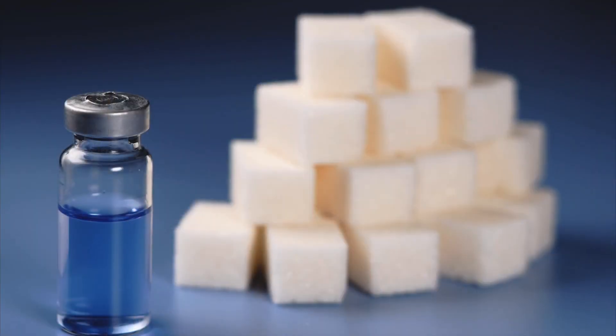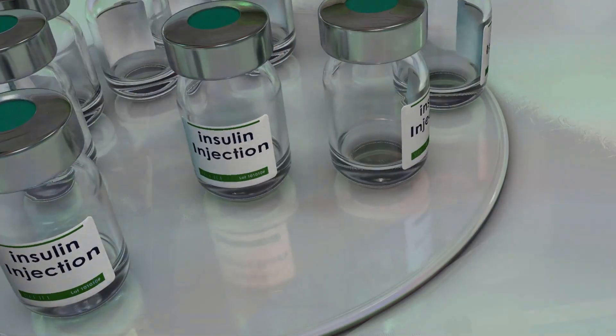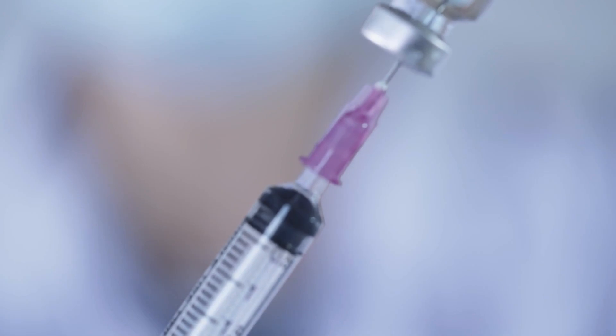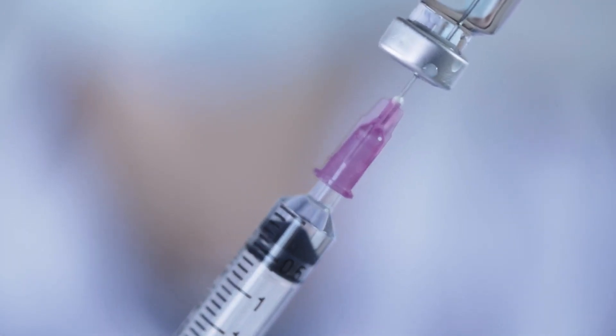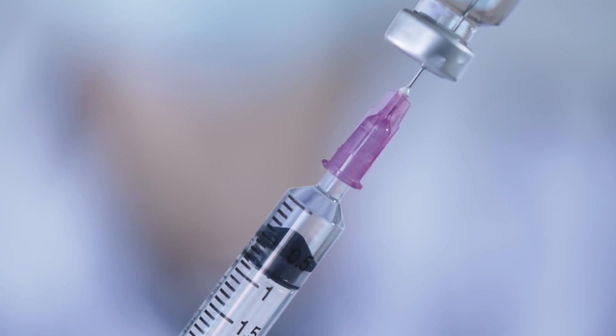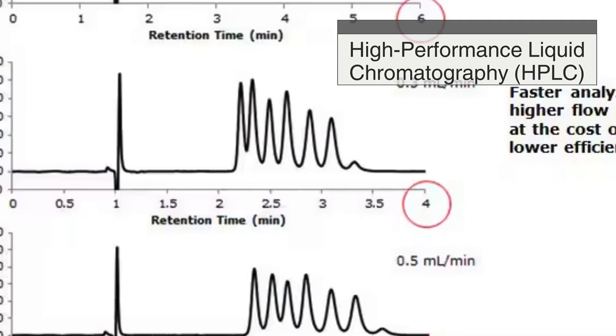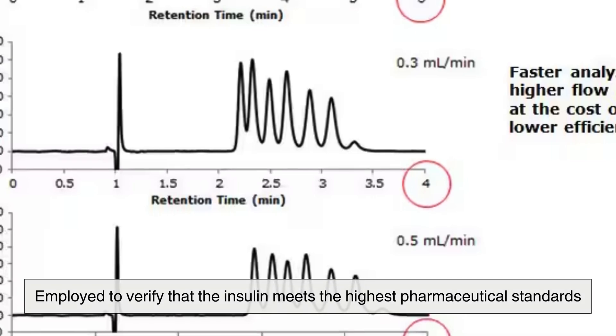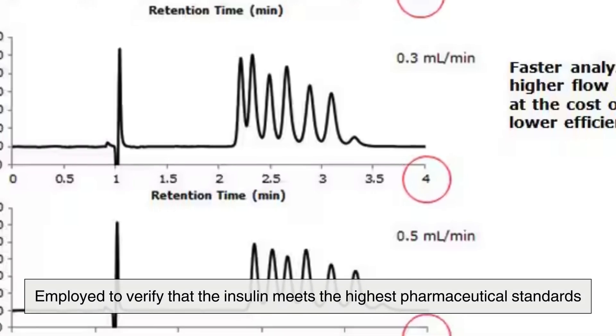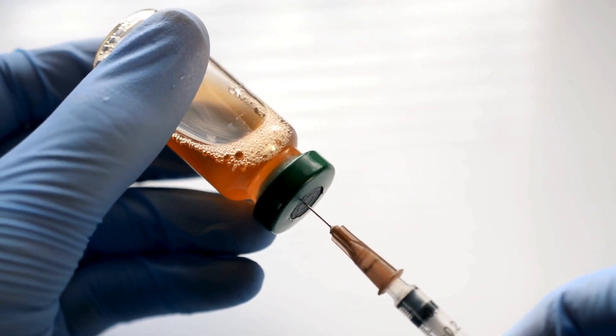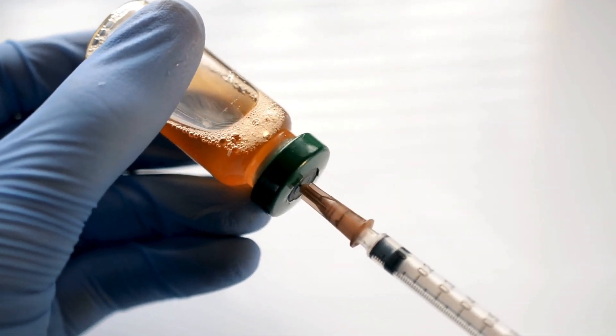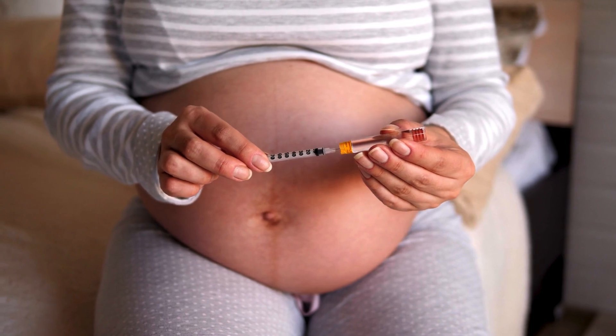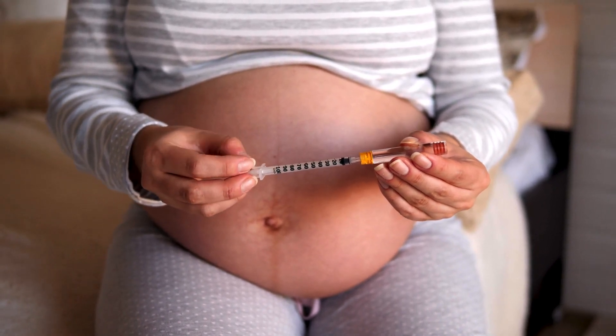Once purified, the insulin undergoes rigorous quality control testing. Every batch is scrutinized for purity, potency, and consistency. Any impurities or abnormalities can compromise its effectiveness, making this phase one of the most critical. Advanced analytical techniques such as high-performance liquid chromatography, HPLC, and mass spectrometry are employed to verify that the insulin meets the highest pharmaceutical standards. In some cases, minor imperfections in structure or purity can lead to entire batches being discarded. It's a meticulous and costly process, but one that ensures every unit of insulin that reaches patients is of the highest possible quality.